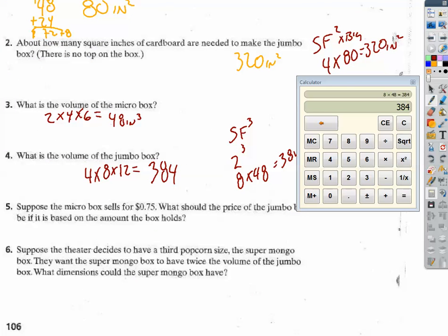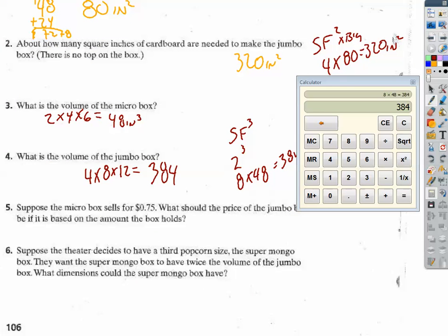Suppose the micro box sells for 75 cents. What should the price of the jumbo be? So that means 75 cents, I'm making a proportion here, 75 cents was good for 48 ounces. So then, what cost is going to be good for 384 ounces?